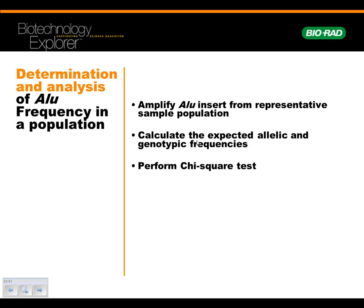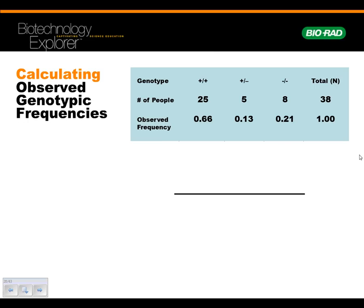So this comes down to: we're going to amplify our ALU insert, and what we're going to do is calculate out expected allelic and genotypic frequencies and do this thing called a chi-square test, which is a statistical tool. Let's say this was a total of 38 people. We ran the gels, and what we had is 25 people found out they were plus-plus, five people were plus-minus, and eight people were minus-minus. So 25 out of 38 — the frequency would be 0.66, or 66% of people had plus-plus; 13% plus-minus; 21% were minus-minus.